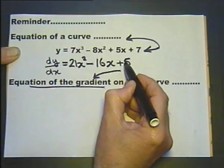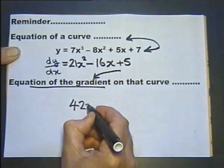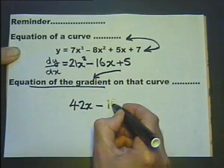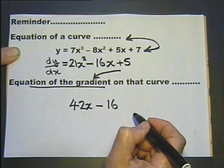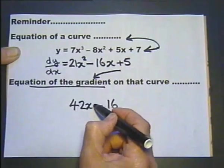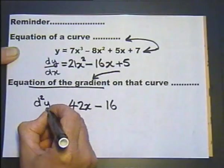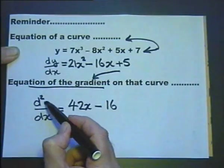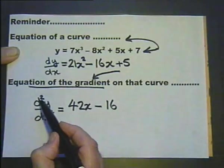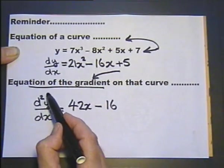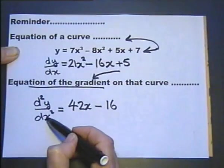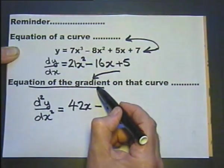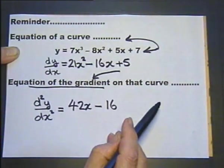There's nothing to stop us differentiating again. Differentiating gives: two times 21x, which becomes a power of one; differentiating minus 16x gives minus 16; and differentiating five gives nothing — it disappears. The first result is called the first differential, and this second result is called the second differential. To indicate the second differential, we write d²y/dx². Although these little indices look like squares, this has nothing to do with squaring at all — it is simply a way of indicating the second differential.